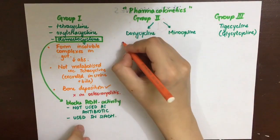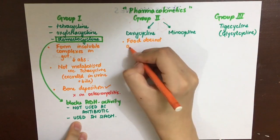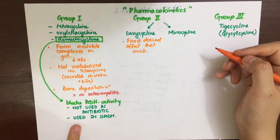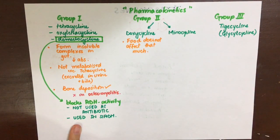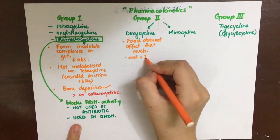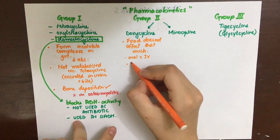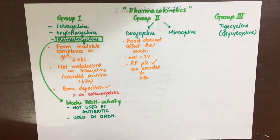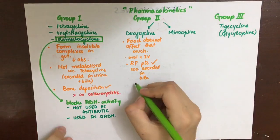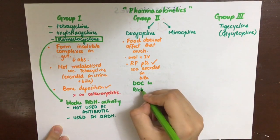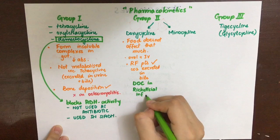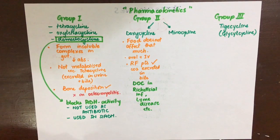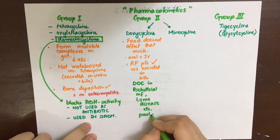Doxycycline is less affected by food because the doxycycline-metal complex at acidic pH in the stomach is unstable and disintegrates, allowing absorption in the duodenum. It can also be given IV. Importantly, doxycycline can be safely given to renal failure patients because it is excreted mainly in the bile. It is the drug of choice for rickettsial infections, Lyme disease caused by Borrelia burgdorferi, and chlamydial prostatitis because it reaches high concentrations in prostatic fluid.